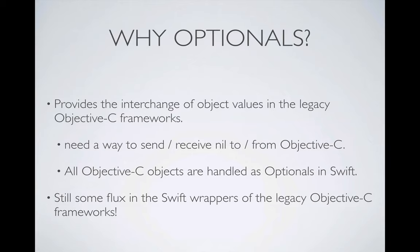Why do we have optionals? It has to do with legacy Objective-C frameworks that Swift integrates with. We need a mechanism to send and receive nil when calling Objective-C framework methods. All Objective-C objects are handled as optionals in Swift. There is still some flux in the wrappers on those legacy frameworks — some things are wrapped that shouldn't be and vice versa — but hopefully those will be addressed by Apple soon.